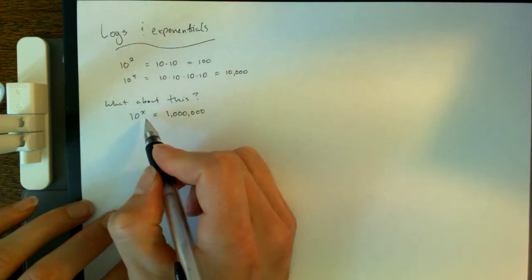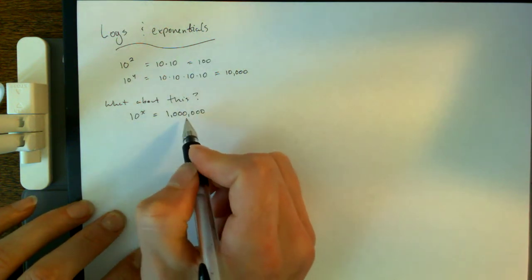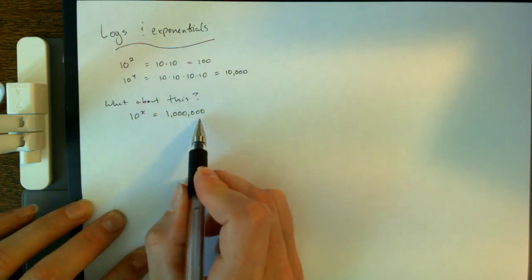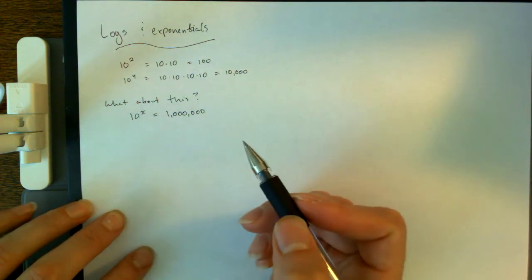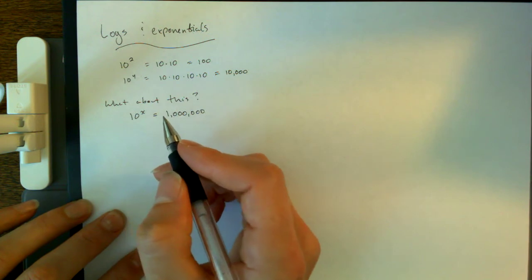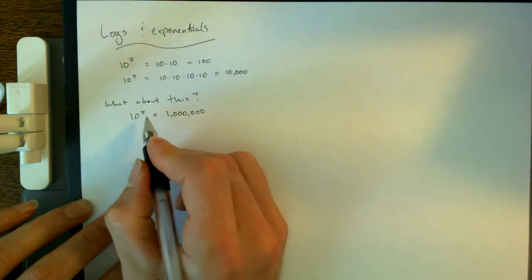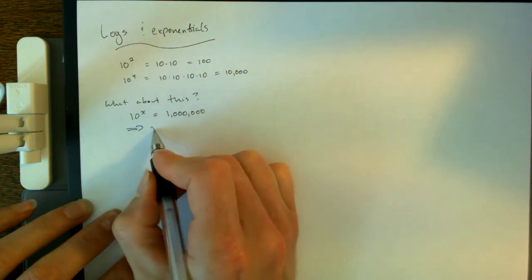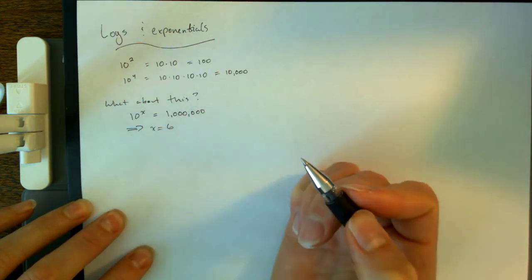This is the same kind of equation, but it says we know the result on the right-hand side, and we're trying to figure out what power x we have to raise 10 to in order to produce this given result that we've specified over here. Now, this statement right here, if we say, well, what must x be here, it's pretty clear that x has to be 6.